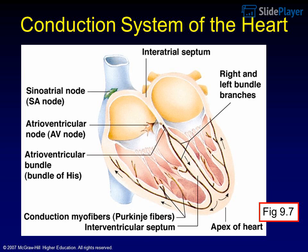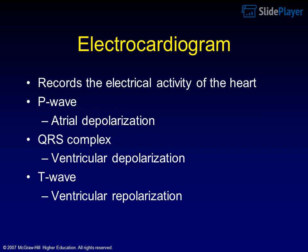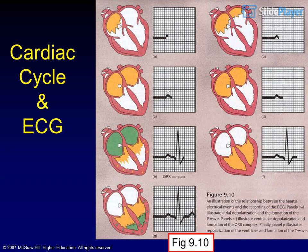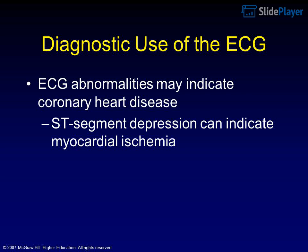The conduction system of the heart is shown in Figure 9.7. The electrocardiogram records the electrical activity of the heart. The P wave represents atrial depolarization. The QRS complex represents ventricular depolarization. The T wave represents ventricular repolarization, shown in Figure 9.9. The cardiac cycle on ECG is shown in Figure 9.10. Diagnostic use of the ECG: ECG abnormalities may indicate coronary heart disease. ST segment depression can indicate myocardial ischemia. An abnormal ECG is shown in Figure 9.8.